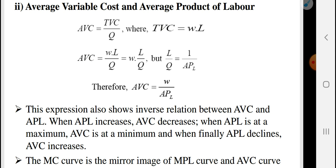This expression also shows an inverse relation between average variable cost and average product of labor. When average product of labor increases, average variable cost decreases. When average product of labor is at its maximum, average variable cost is at its minimum. When average product of labor declines, average variable cost increases.